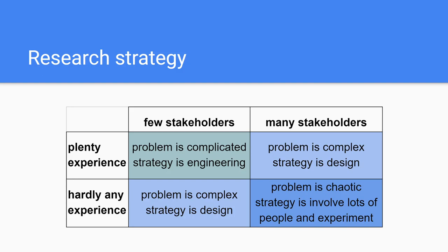When we make a matrix using the two dimensions — experience and stakeholders — we can map out the complexity of the problem and determine the basic solution strategy. When a problem only has a few stakeholders or covers a few disciplines, and there is plenty of experience in solving the problem, we will call the problem complicated. The strategy for solving it is traditional research and project management skills, which we will also call engineering. When dealing with complicated problems, there is usually only one best solution.